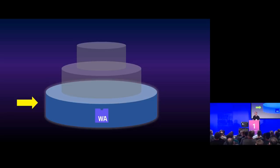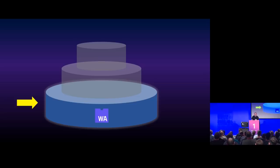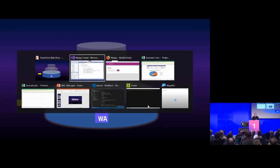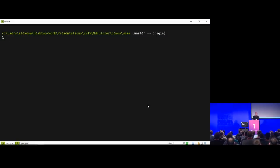WebAssembly is a bytecode format. The spec says here's a way of describing programs in a low-level bytecode, and browsers are supposed to implement support for executing it — and they have done that. All mainstream ones, including mobile, have done that. You may never have actually seen the bytecode itself, so let's have a go. I'm going to create a small WebAssembly application right now — calling it an application might be a stretch because it's very simple, and it has nothing to do with .NET or Blazor. This is just pure WebAssembly on its own.